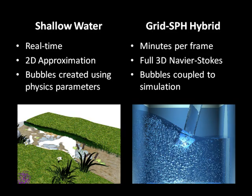We have chosen two different fluid simulators commonly used in computer graphics: a shallow water approximation and a grid-SPH hybrid method. The grid-SPH hybrid method does a full 3D fluid and bubble simulation. Our algorithm automatically extracts the bubbles and generates the corresponding liquid sound. The shallow water simulator is used to highlight the real-time nature of our sound synthesis mechanism, as well as our ability to generate sound in the absence of explicit bubbles.